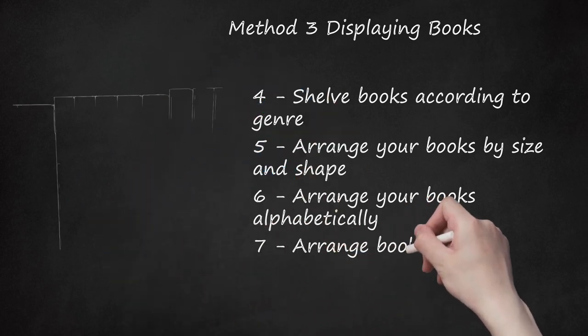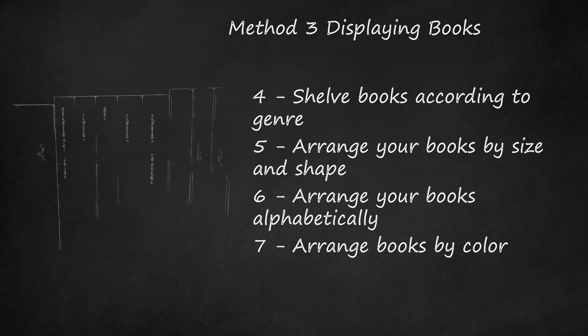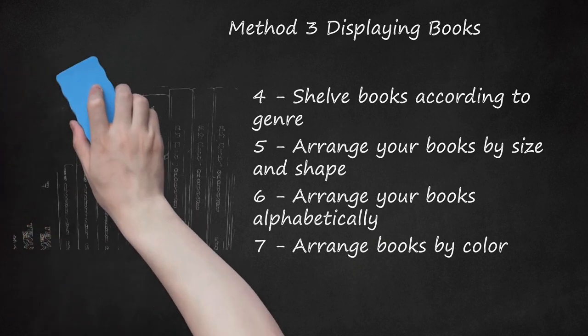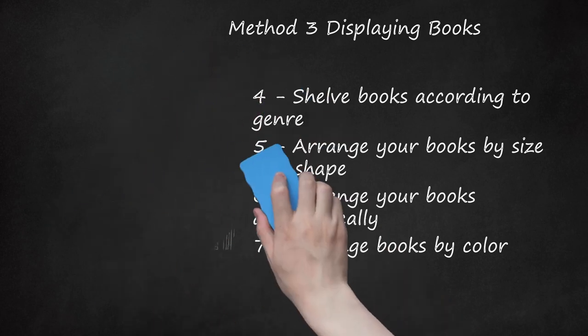Arrange books by color. If you've got an eye for design, organizing your books according to the color of the binding can be an excellent way to give your room a pop of particular color and make your bookshelves really stand out. Group them according to specific colors and put them on the shelf in subtle gradations, moving from one color to the next. Consult the color wheel to learn more about interior decorating.